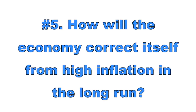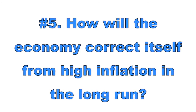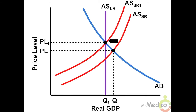Number five: how will the economy correct itself from high inflation in the long run? Classical economic theory again suggests the government should do little. Workers demand higher nominal wages as inflation expectations rise, increasing the cost of production. The SRAS curve shifts left toward the LRAS curve until long-run equilibrium is achieved — the price level increases, real GDP decreases, and the unemployment rate rises.